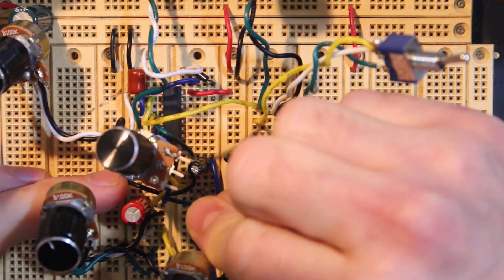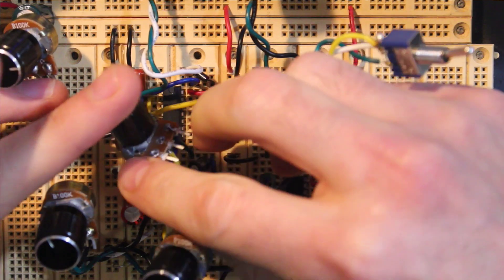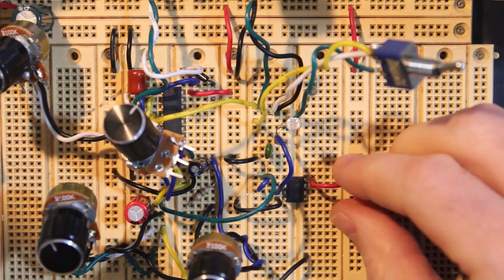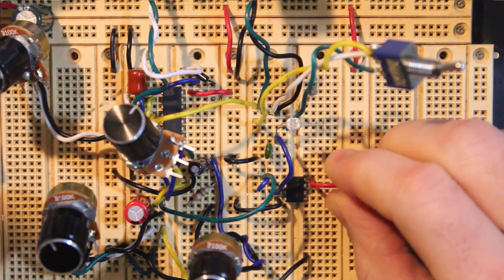We'll send this buffered output to our volume control circuit. Right now we've set up a basic passive low-pass filter with a buffered output. Let's see how it sounds.